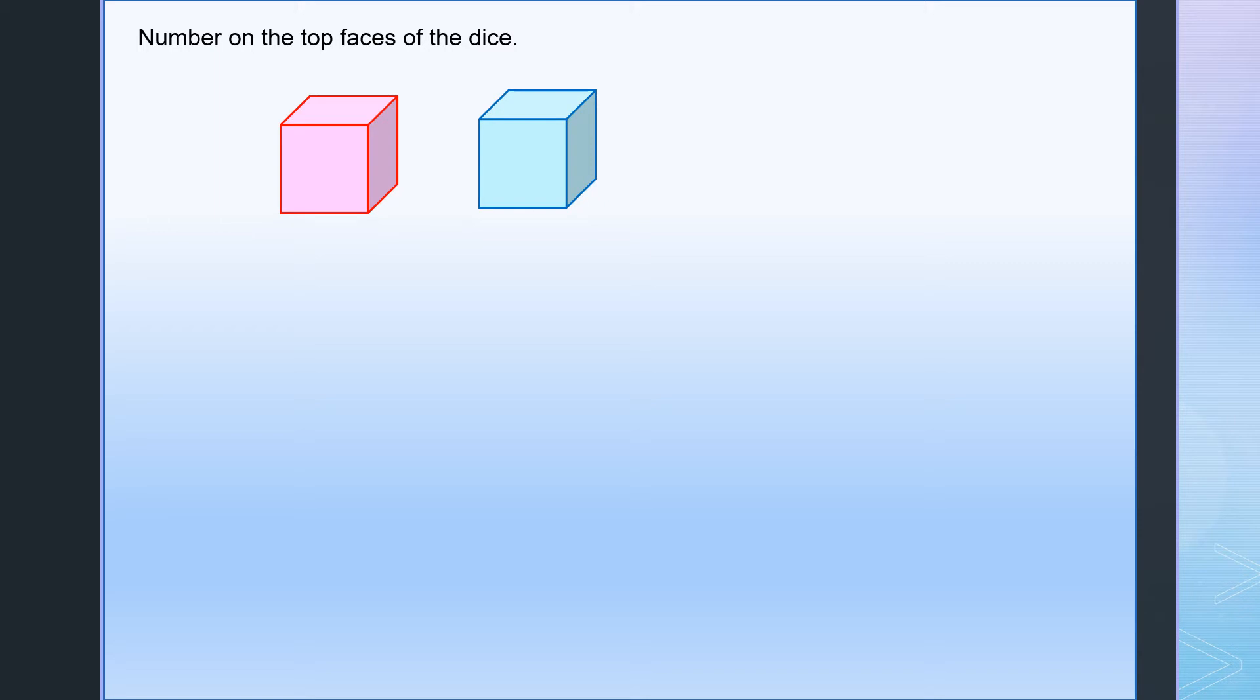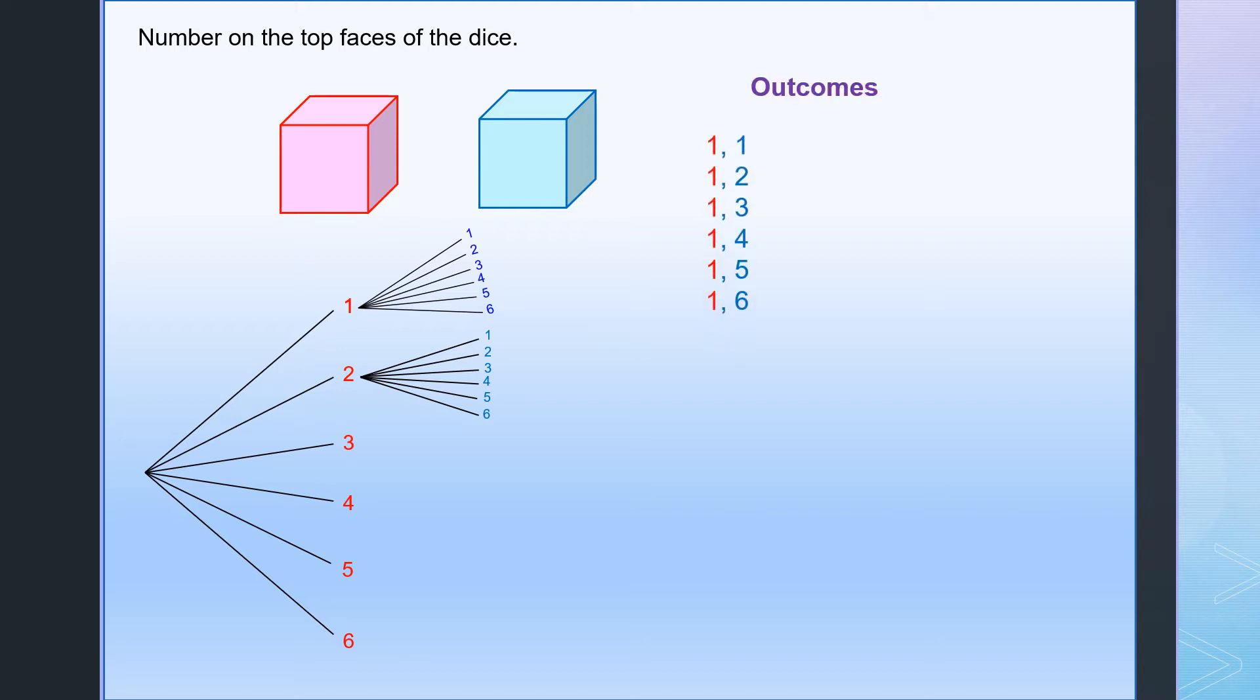Let's look at the number on the top faces of the dice. If the red die is 1, then the blue die can be 1 or 2 or 3 or 4 or 5 or 6. Then the outcomes, we have 6 sets of outcomes.